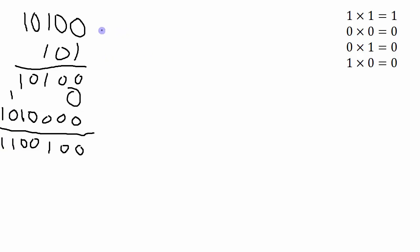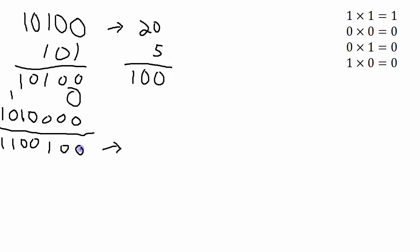Let's convert these two numbers into base ten. 10100 is equal to twenty, and 101 is equal to five. Twenty times five is, of course, equal to one hundred — and remember this is a base ten number, so it's a hundred and not four. Now let's convert my answer: I've got four plus thirty-two plus sixty-four, which does equal one hundred. So this conversion into base ten form shows me that I've done the base two multiplication correctly.